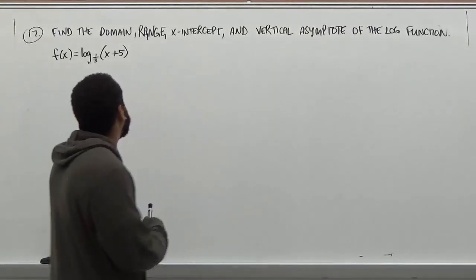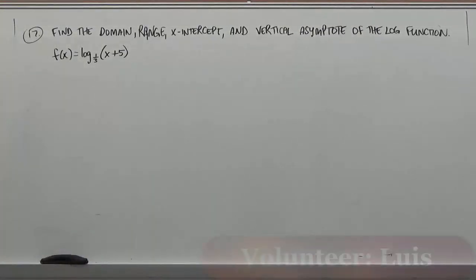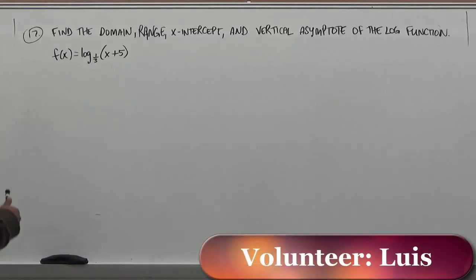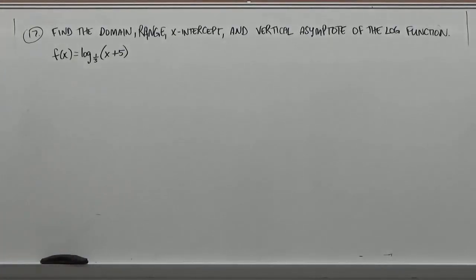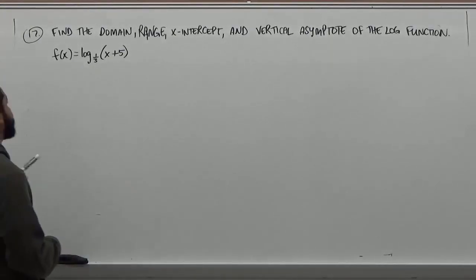Hello, and welcome to HelpYourMath.com. In today's problem, we're going to be finding the domain, the range, the x-intercept, and the vertical asymptote of the log function f(x) = log base one-third of (x+5).